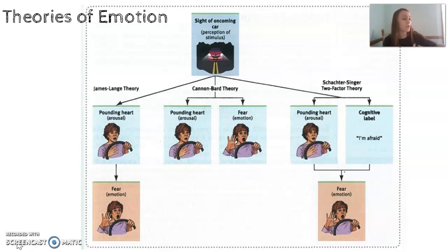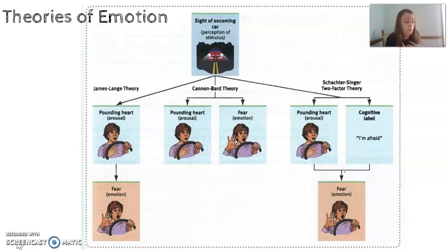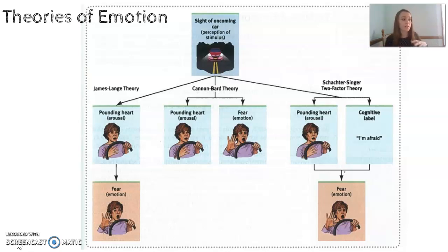To explain Schachter-Singer further: if you're walking on a sidewalk and see a dog running toward you, your heart might start to race, but depending on your situation you might have a different emotion. Maybe you've had experiences where dogs attacked you — your heart is racing and you put it together as a dangerous situation, so you're scared. Or maybe you've always loved dogs — your heart is racing and you realize this is happiness, you're happy the dog is coming. So in Schachter-Singer, your biological arousal happens while you have a cognitive assessment of the situation before you know what you're feeling.